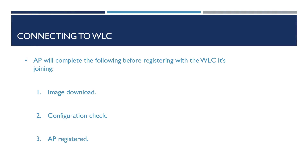Now you've seen the AP join the wireless controller, there are a few things to note regarding the steps the AP completes once it selects a controller. Firstly, it will check its firmware against that of the controller. If there is a mismatch, the AP will download the firmware from the controller and reload to boot the new image. Secondly, the AP will check its configuration against that on the wireless controller, and if there is a mismatch, it will download the latest configuration. Finally, once both of these checks have been completed, the AP will register with the wireless controller.